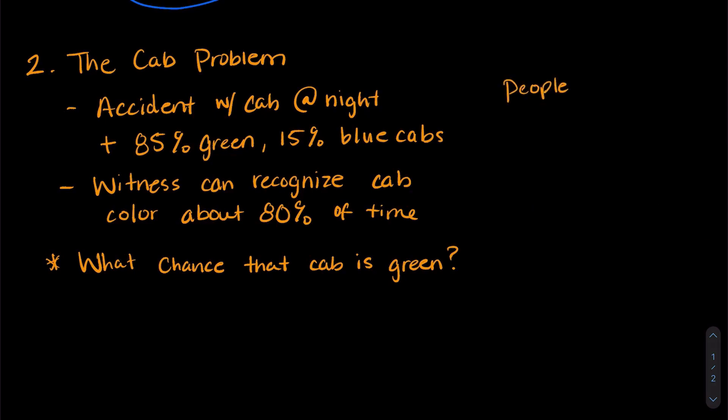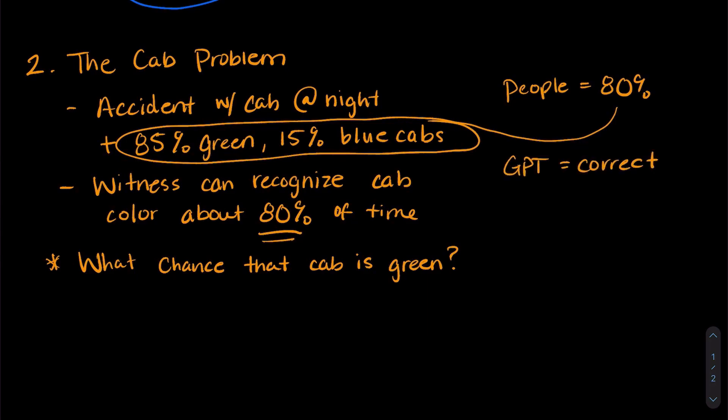Now the most common answer that people give is 80%. Now the reason that people give that answer is because they ignore the base rate and just use the last information they were given. GPT usually gets this answer correct because it actually calculates the statistics combining the base rate and whether the witness can recognize things.